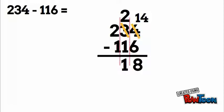The key here is that whenever you have to borrow, you borrow one from the place value to the left and it becomes 10 in the place value to the right.